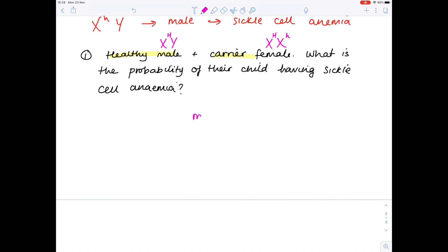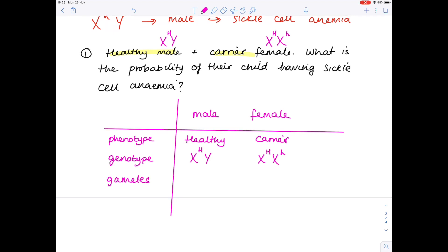I always use the same method, so we're going to say male and female. Use this template always when answering these questions. So the phenotype, what is that physical appearance? So the male is healthy and the female is a carrier. The genotype now is the alleles contained by the organism, so we've already written that to make it easier for ourselves. We've got XY with that capital H there, XX, one large H, one small h. Next up, the gametes.